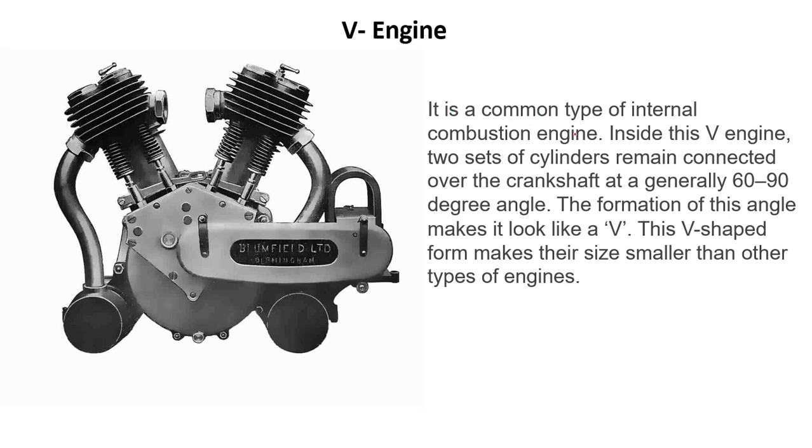A V engine is a common type of internal combustion engine. Inside this V engine, two sets of cylinders remain connected over the crankshaft at generally a 60 to 90 degree angle. Basically, these are two IC engines connected to the crankshaft, making a V shape.